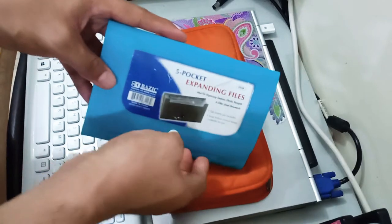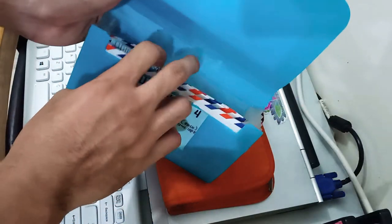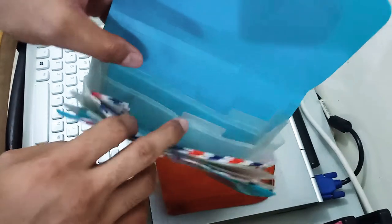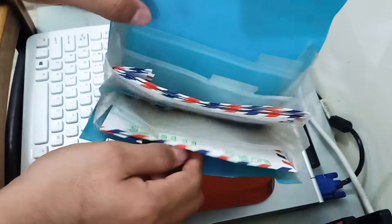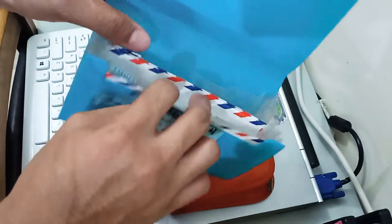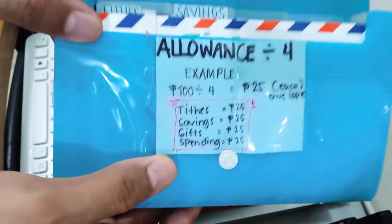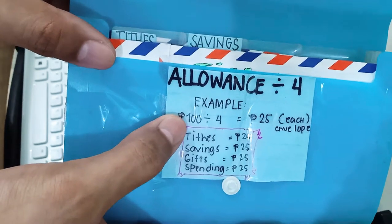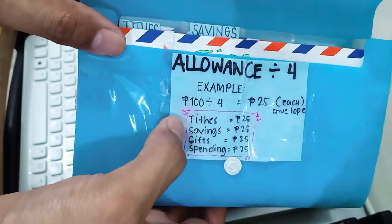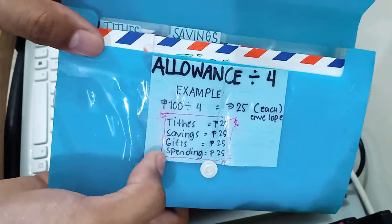Before this binder, we used this blue one — my first two years of marriage we were using that. You can find many of these at the bookstore. We've passed on the baton to our children, hoping to effectively teach them how to budget and save. My wife made this one for our son — it has pockets for tithes, savings, gifting, and spending. His 100-peso allowance is divided four ways: 25 pesos each for tithes, savings, gifting, and spending.